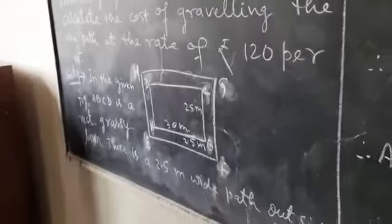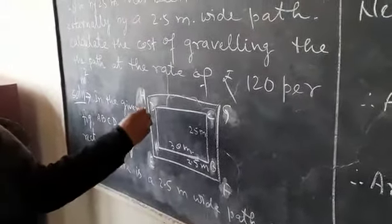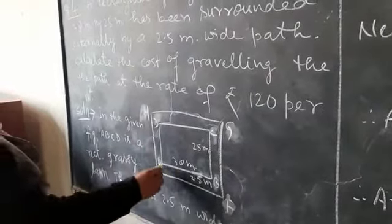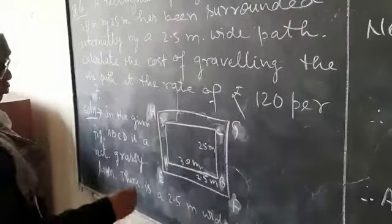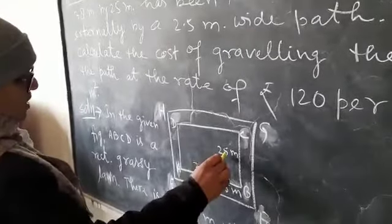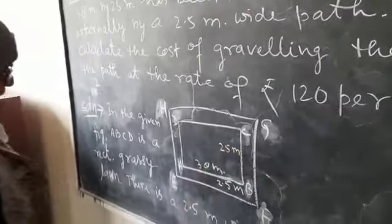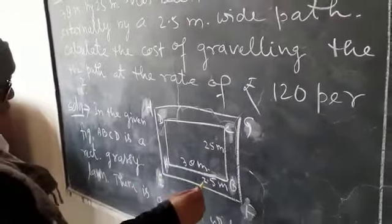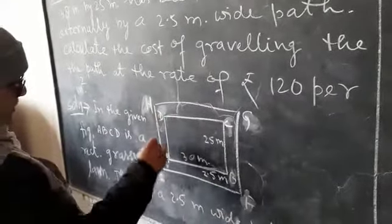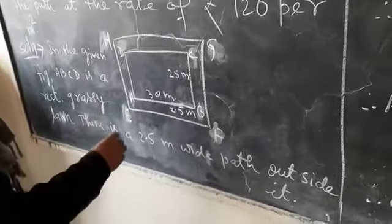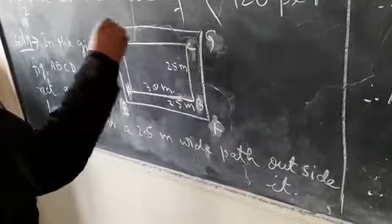Therefore, its solution: First we will draw a rectangular grassy lawn ABCD whose length is 38 meter and breadth is 25 meter. Around it, there is a 2.5 meter wide path surrounded by ABCD. Therefore, the new figure will be EFGH.